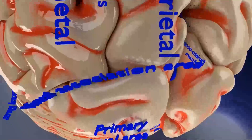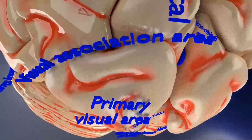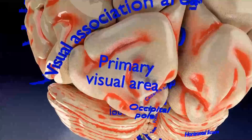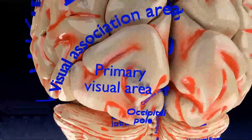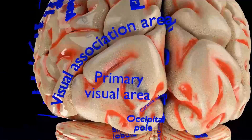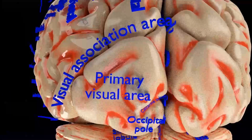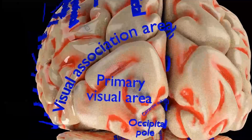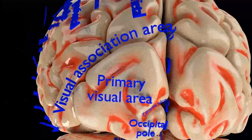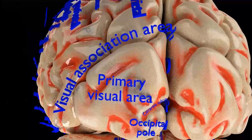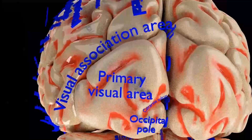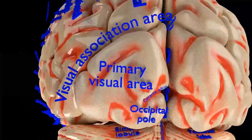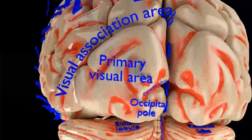The occipital lobe lies behind the parietal lobe. The primary visual area receives input from the opposite visual field via the optic radiation. The visual field is represented near the calcarine sulcus in a retinotopic fashion, with upper quadrants of the visual field along the inferior bank of the sulcus and lower quadrants on the upper bank. Central vision is represented mostly caudally and peripheral vision rostrally.